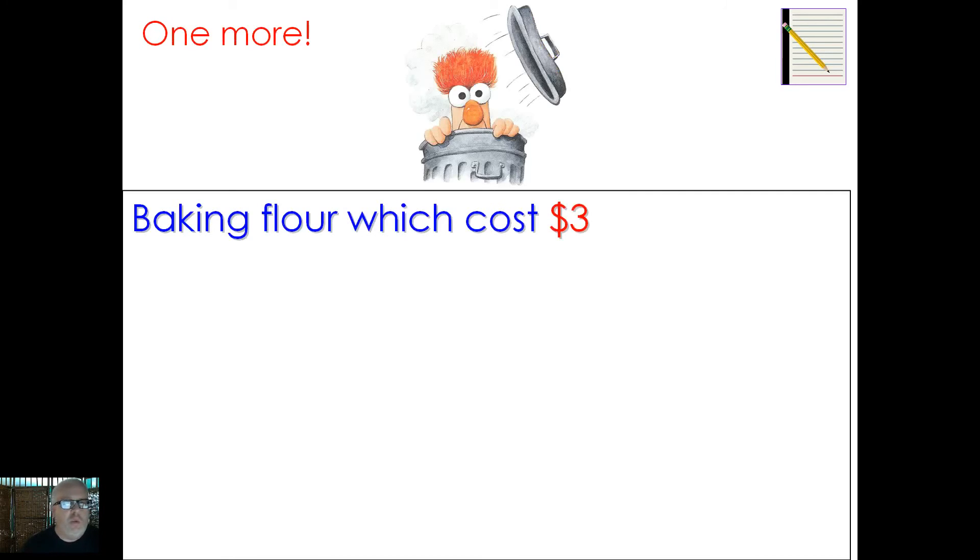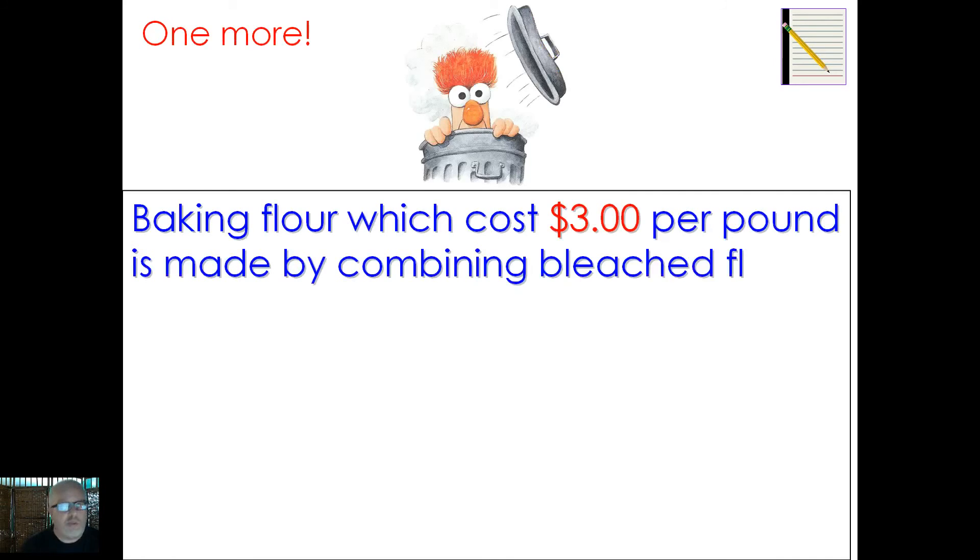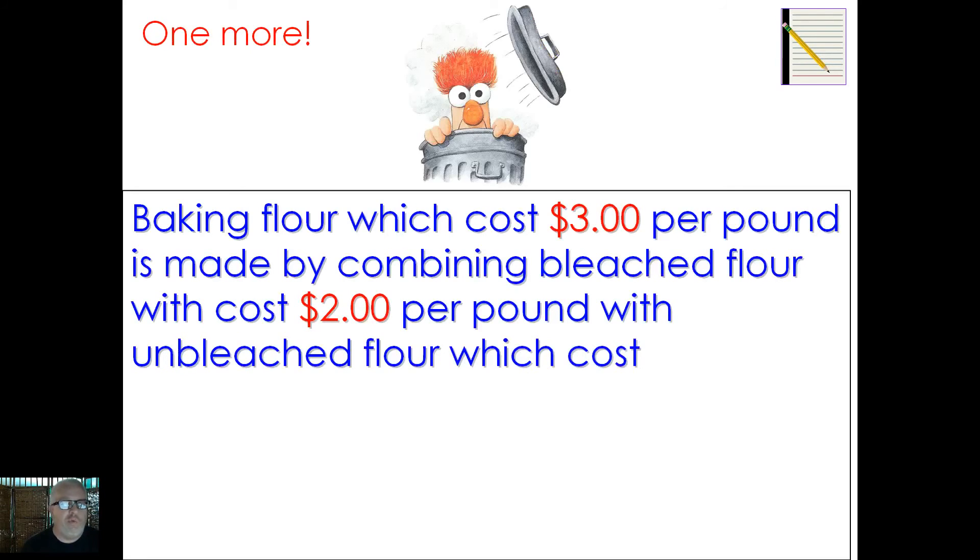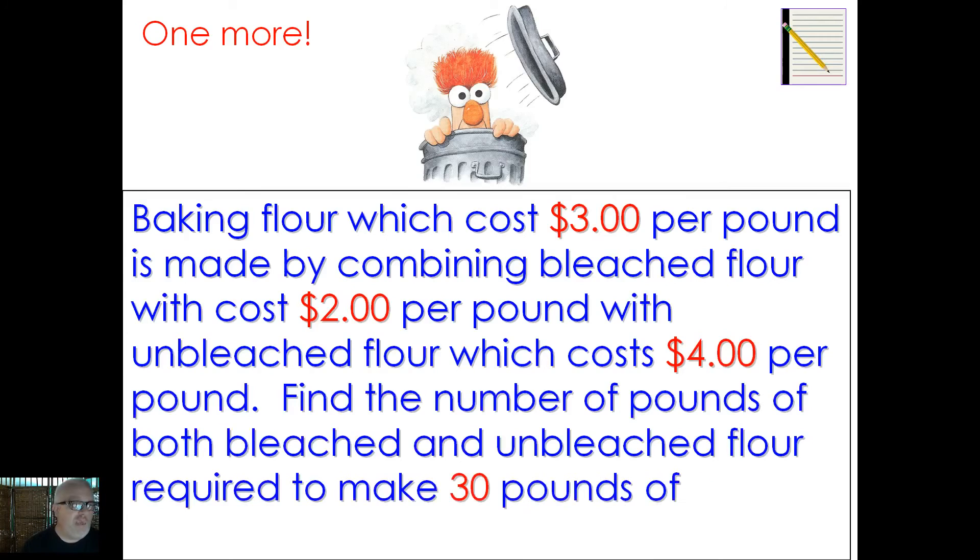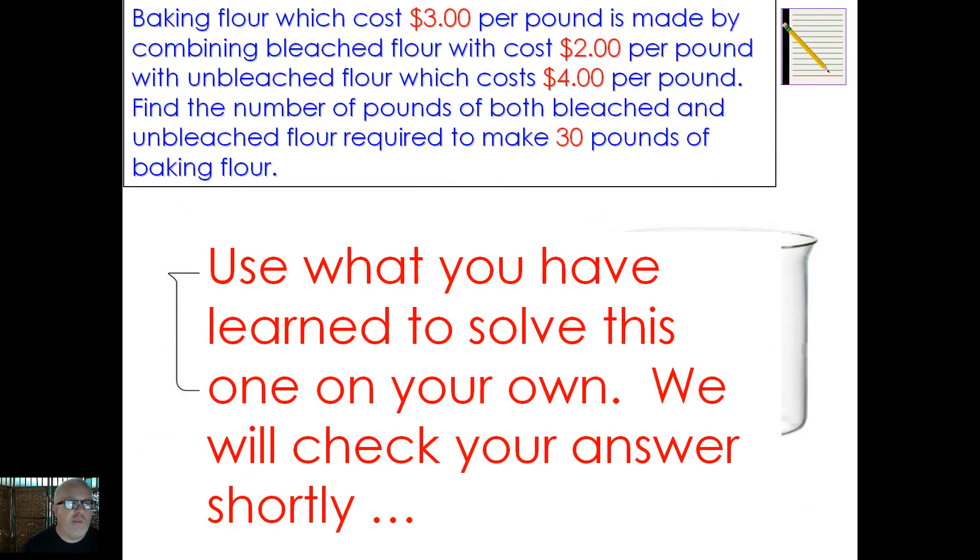All right, hopefully you ventured out there and got that on your own. Now this one here, our last one, we're going to ask that you maybe really go ahead and stop the video when we get through reading this and do this completely on your own. Baking flour which costs $3 per pound is made by combining bleached flour which costs $2 per pound and unbleached flour which costs $4 per pound. Find the number of pounds of both the bleached and the unbleached flour required to make 30 pounds of baking flour. So baking flour is of course when people bake bread or rolls or anything like that for families, you need both bleached and unbleached flour combined. So take a look at those numbers and let's see what you got. Use what you've learned to solve this one on your own and we will check your answer shortly. Go ahead and press pause, work this one out to completion.